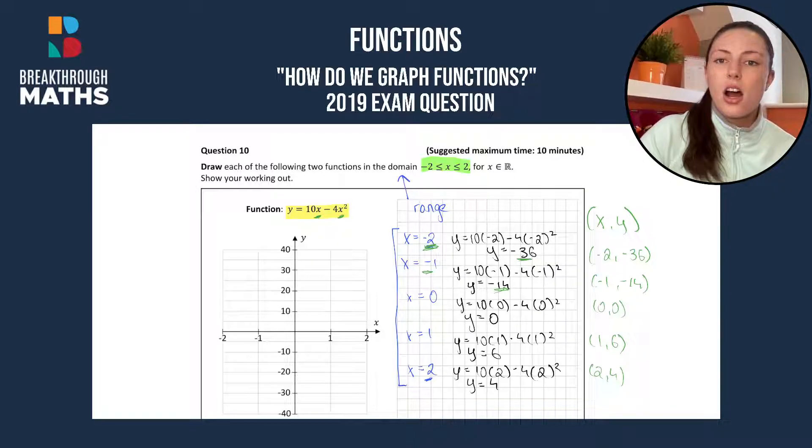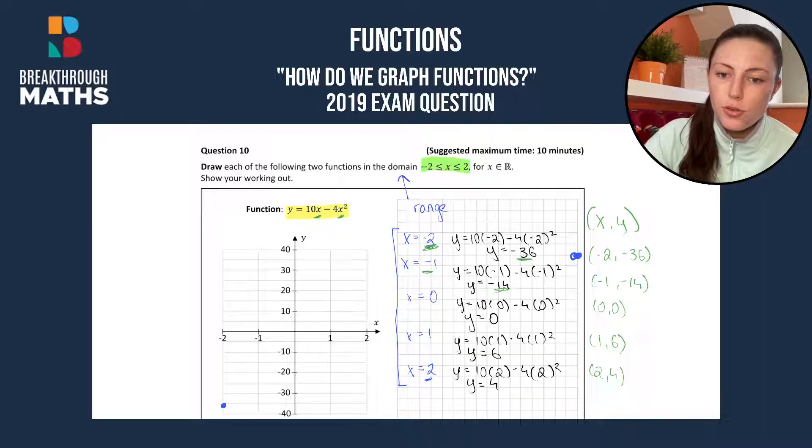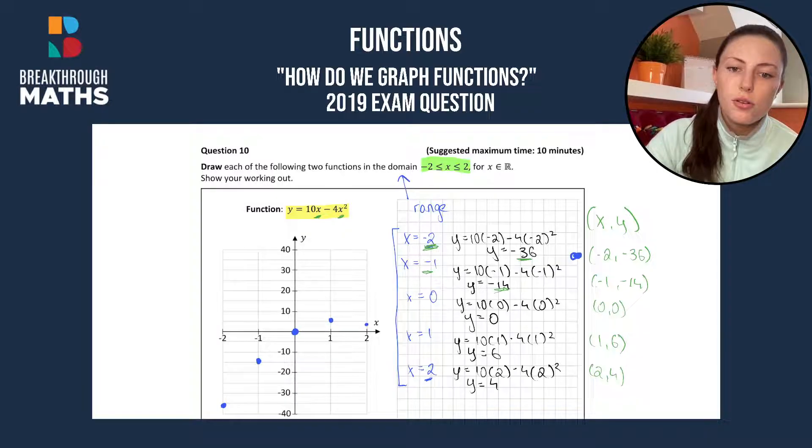Now we just plot these on our graph. We have minus 2 minus 36 first. That's minus 2 on the x and we go down to minus 36 which would be about here. Then we have minus 1 minus 14 which would be about here. Then we have 0, 0 right in the middle. We have 1, 6 and then we have 2, 4.